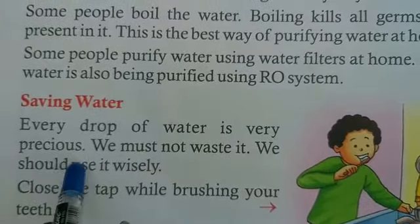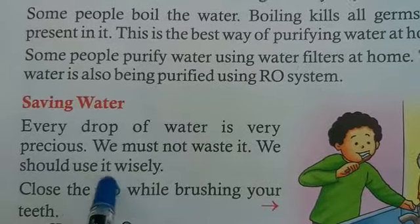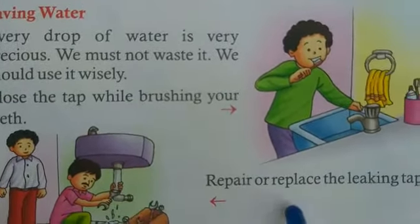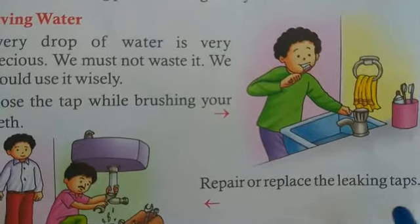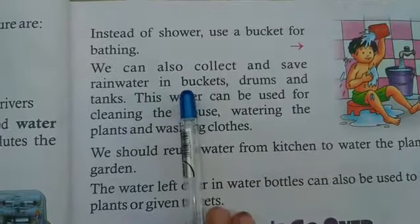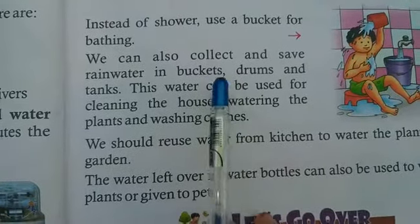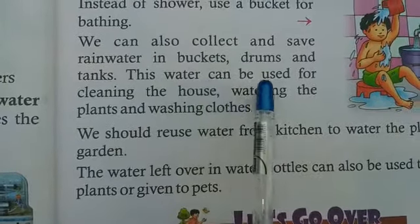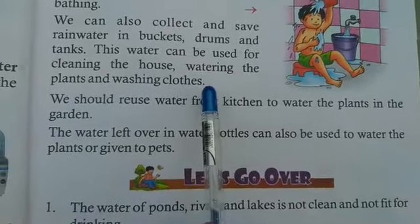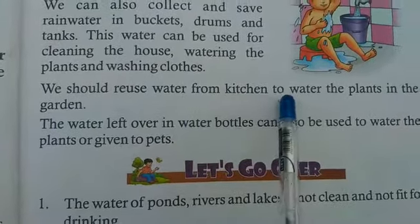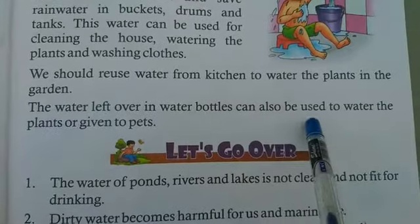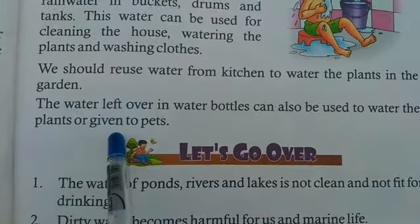Saving water. Every drop of water is very precious. We must not waste it — we should use it wisely. Close the tap while brushing your teeth. Repair or replace the leaking taps. Instead of a shower, use a bucket for bathing. We can also collect and save rainwater in buckets, drums and tanks. This water can be used for cleaning the house, watering the plants and washing clothes. We should reuse water from the kitchen to water the plants in the garden. The water left over in water bottles can also be used to water the plants or given to pets.